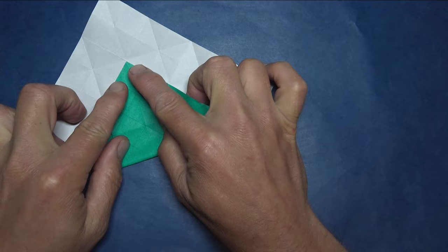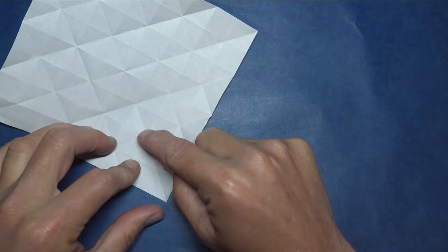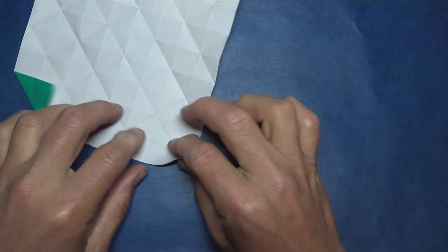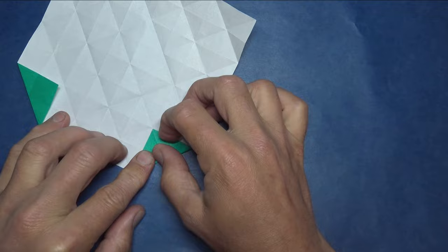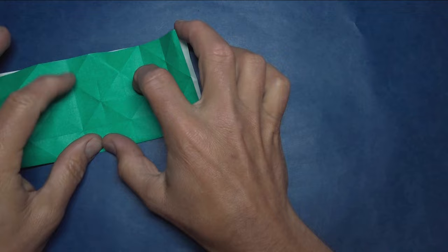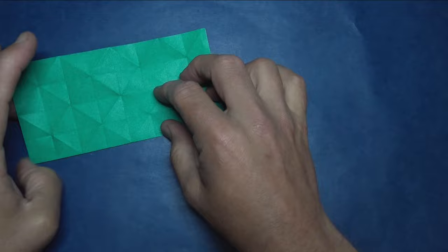And fold to this intersection point. Fold in half again and fold sharply, unfold.